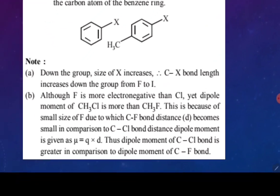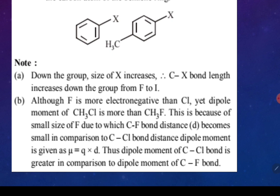There are also some important notes. First: as you go down the group, the size of the halogen atom increases — fluorine, chlorine, bromine, iodine — resulting in a larger bond length down the group. So carbon–iodine bond length is greater than carbon–fluorine bond length. Second, a very interesting point: although fluorine is more electronegative than chlorine, the dipole moment of CH3Cl is greater than that of CH3F. Dipole moment is defined as charge multiplied by distance.